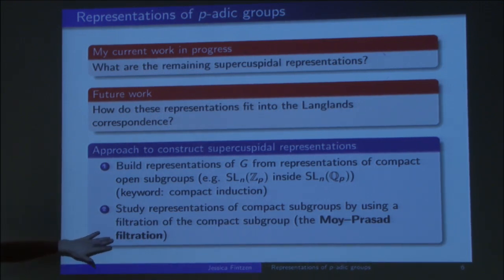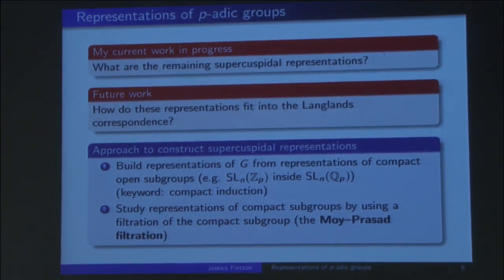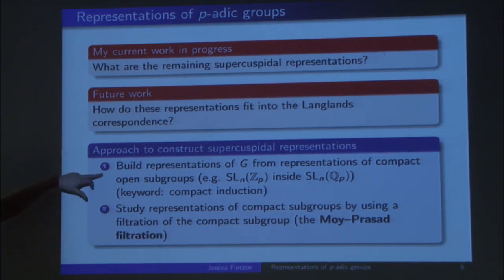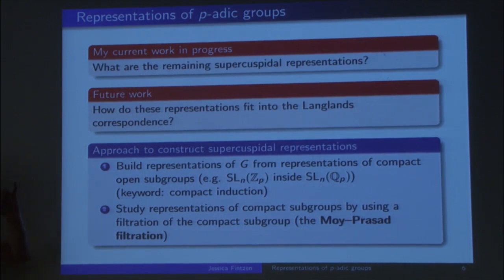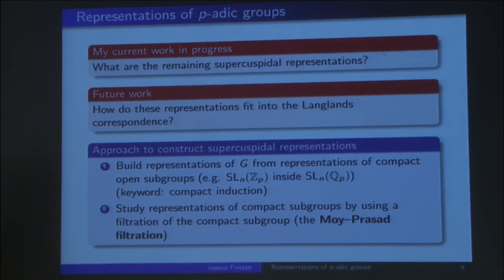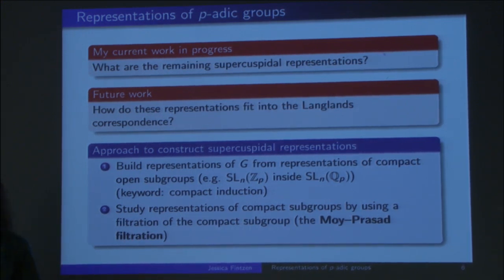I can tell you a bit more about the Moy-Prasad filtration. A question: is the construction only up to the epipelagic level, or will it work deeper? The way you construct representations in general is by induction from compact open subgroups, but it's much easier if you start at the epipelagic level. If you start at a deeper level, you have to work much harder. For large primes P, JKU does it that way — he induces from compact subgroups. For small primes, there's no construction yet — that's what I'm working on, with some constructions on my notepads.